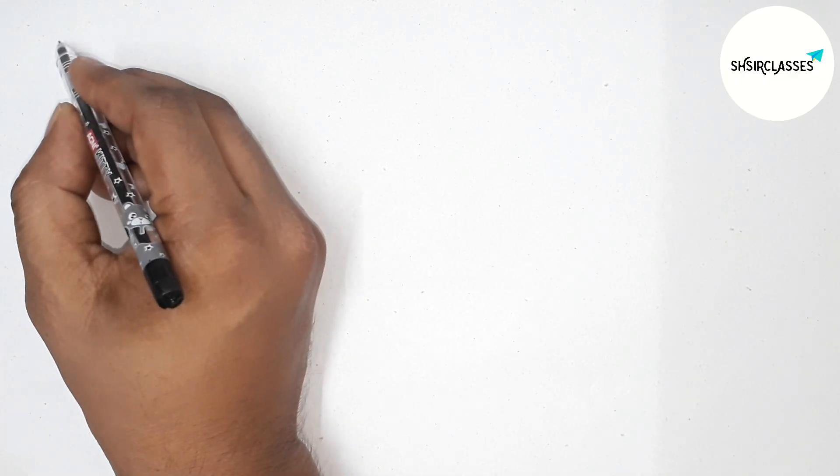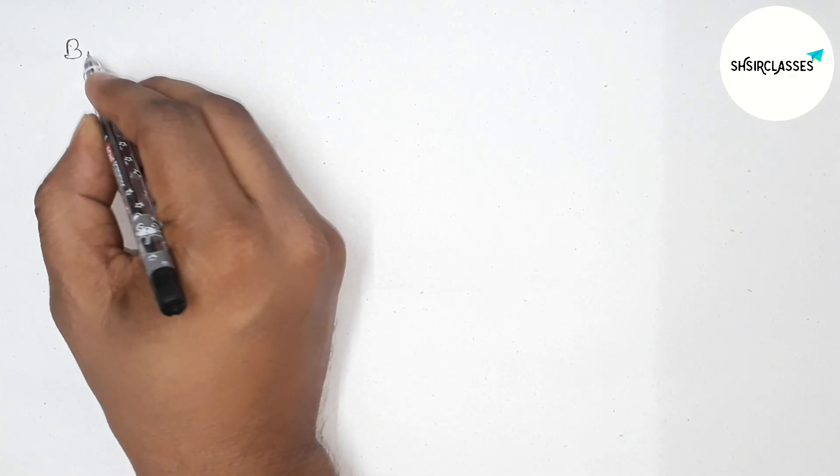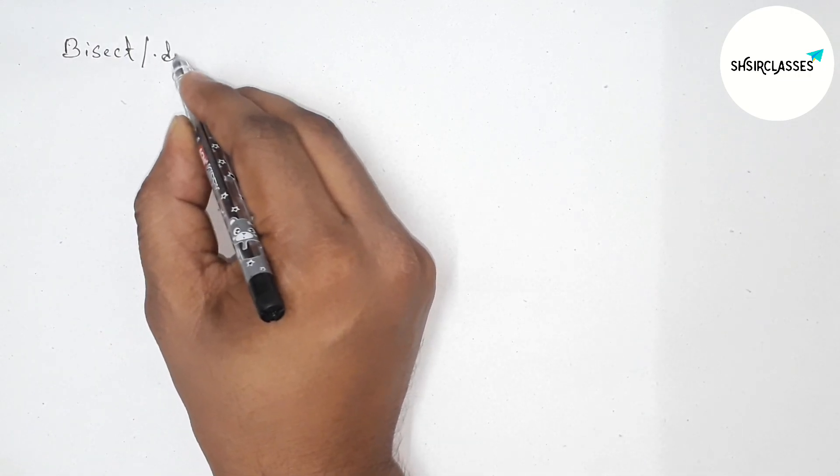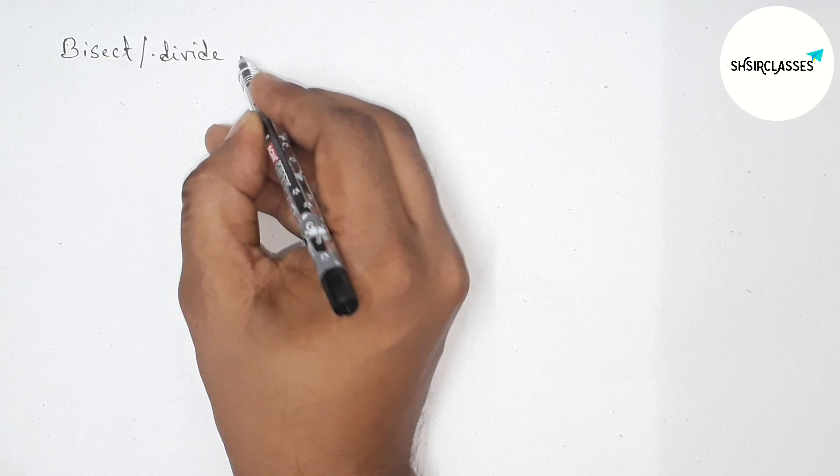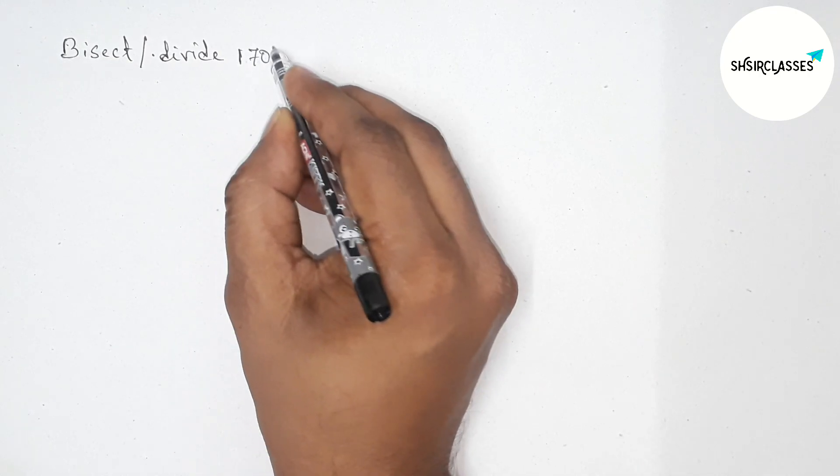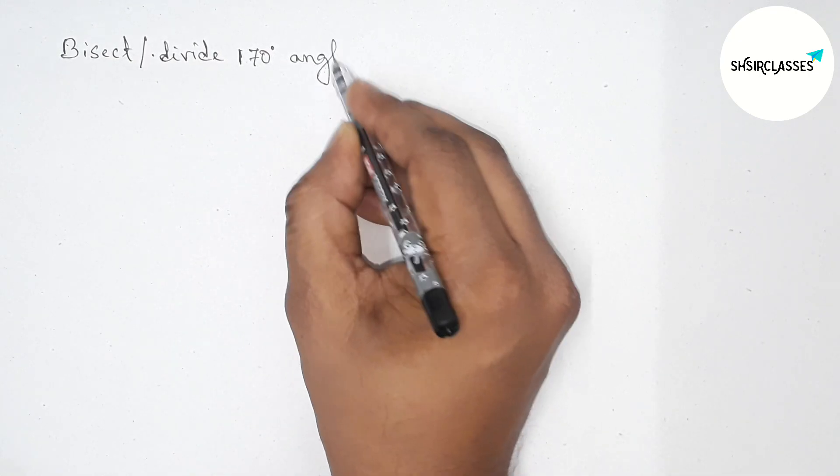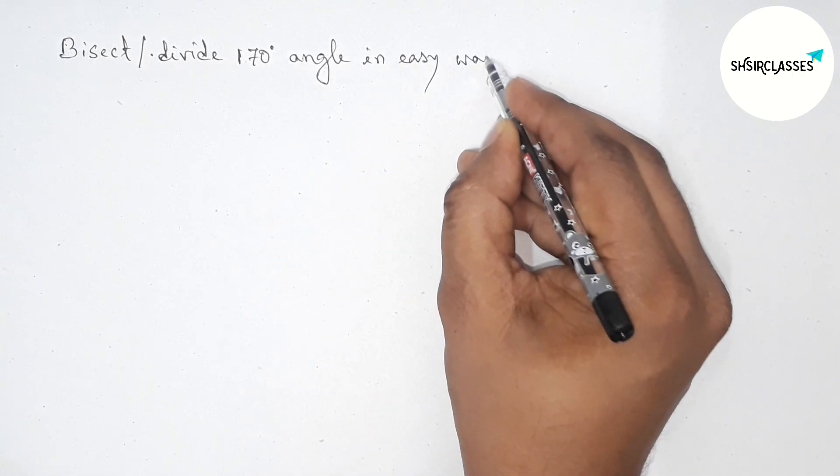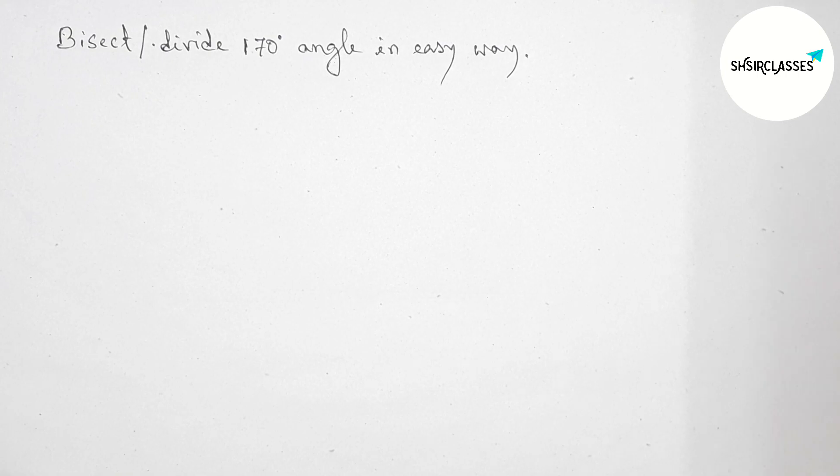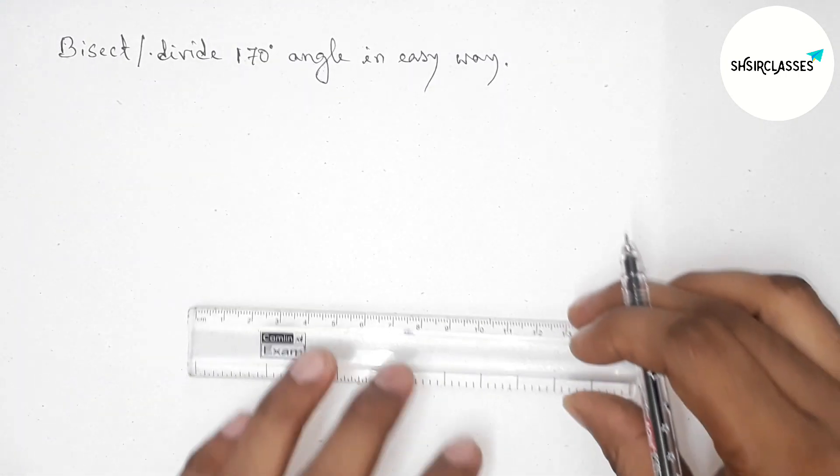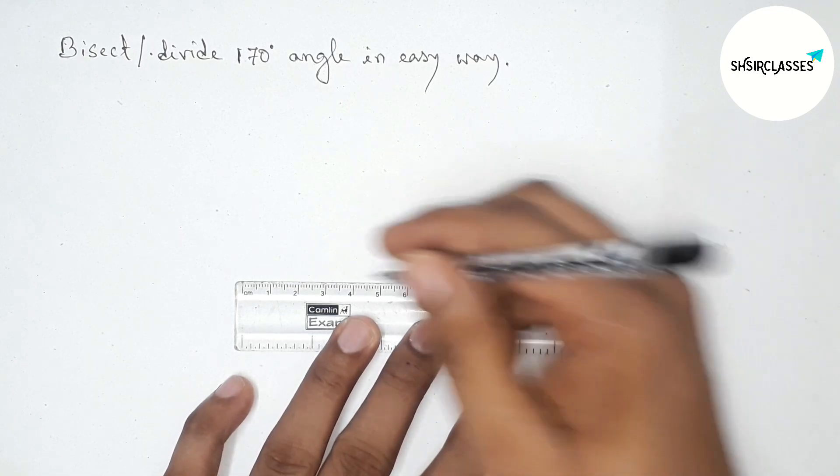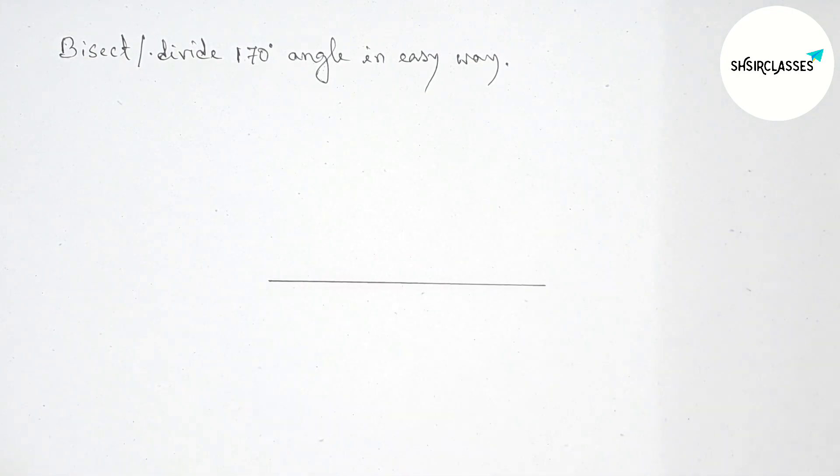Hi everyone, welcome to SI Share Classes. Today in this video, we'll bisect or divide a 170-degree angle in an easy way. So let's start the video. First of all, let us draw here a line segment of any length.